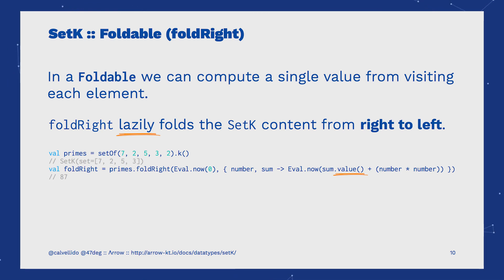In Arrow, for this kind of lazy computed values, Eval can be used. For more information on this data type, you can check out the Eval video in this series. In this video, we learned about SetK. As part of Arrow's unified programming model, SetK shares a lot of functions and functionality with other higher-kinded wrappers. We will learn more about those in the next videos. Thanks for watching.